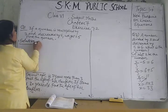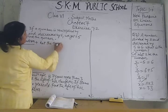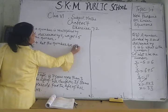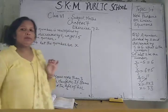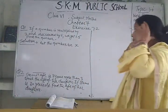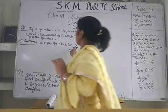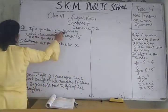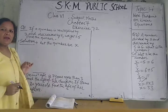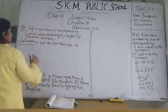We don't know the number, so we have taken the variable x. If a number is multiplied by 3, that number is multiplied by 3 and decreased by 5 — decrease means 5 is subtracted from 3 times x.